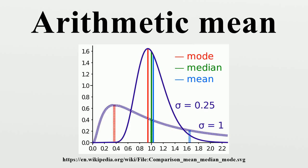If the data set is a statistical population, then the mean of that population is called the population mean. If the data set is a statistical sample, we call the statistic resulting from this calculation a sample mean.